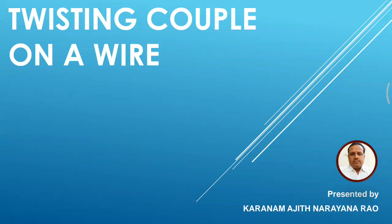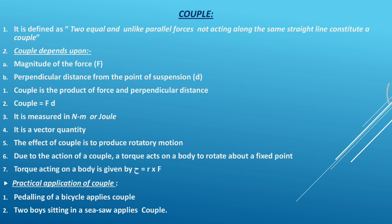To understand this, first we shall understand what is a couple. A couple is defined as two equal and unlike parallel forces not acting along the same straight line. Couple depends upon two factors: one is magnitude of the force, and another is perpendicular distance from the point of suspension. Therefore, couple is the product of force and perpendicular distance, given by F into d, where F is the force and d is the perpendicular distance. It is measured in newton meter or joule.